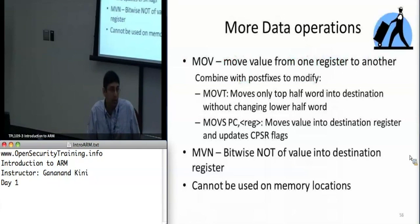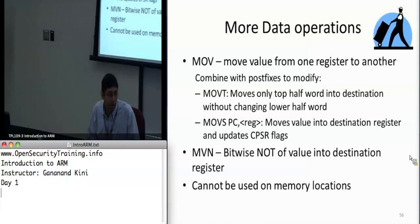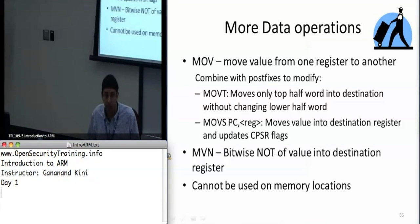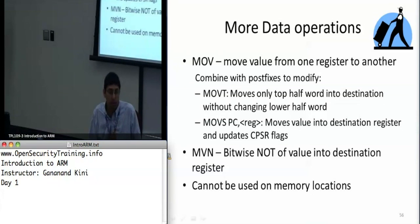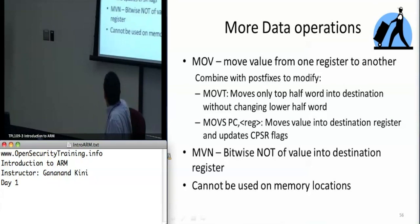We've covered arithmetic instructions so far, and some of the inline barrel shifter feature. Now we'll start talking about how we can move data around. This doesn't cover memory operations yet, but there are two instructions you need to know for moving data from one register to another: MOV and MVN. MOV just moves the value in one register into another register.